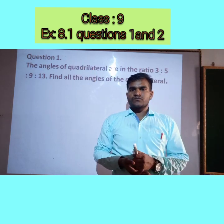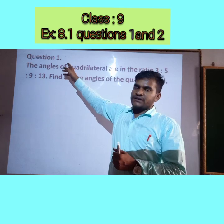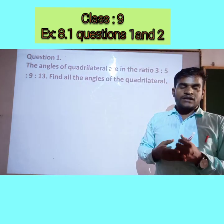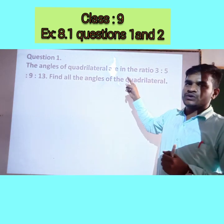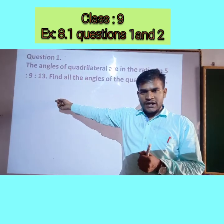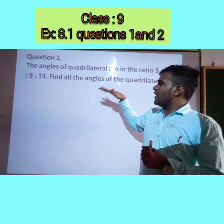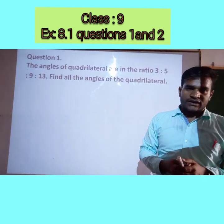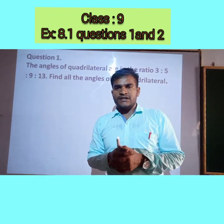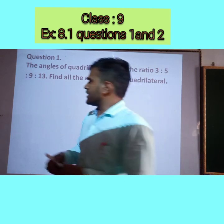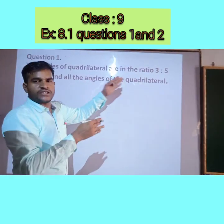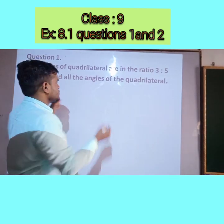Here question number 1 that is given: the angles of a quadrilateral are in the ratio 3:5:9:13. Find all the angles of the quadrilateral. So in this discussion, first we will consider the angles of the quadrilateral because the ratio is given — angles in the ratio 3:5:9:13.